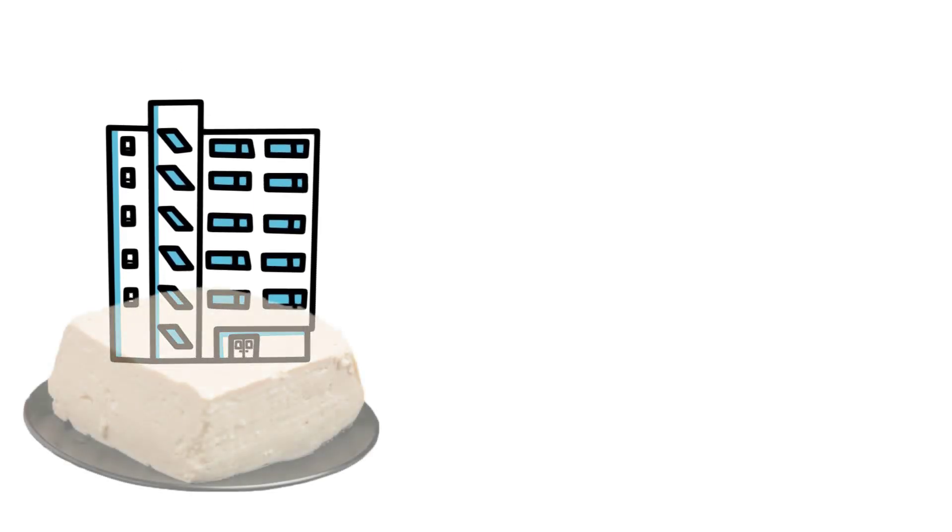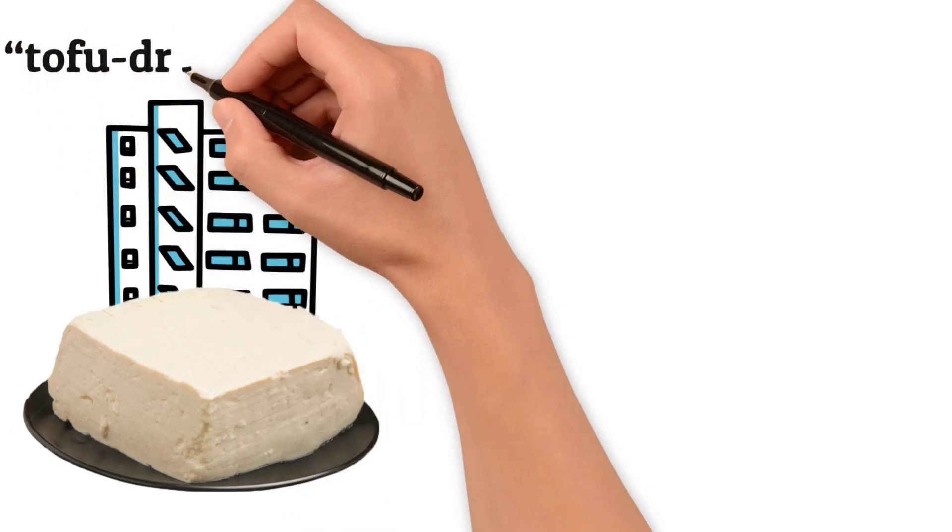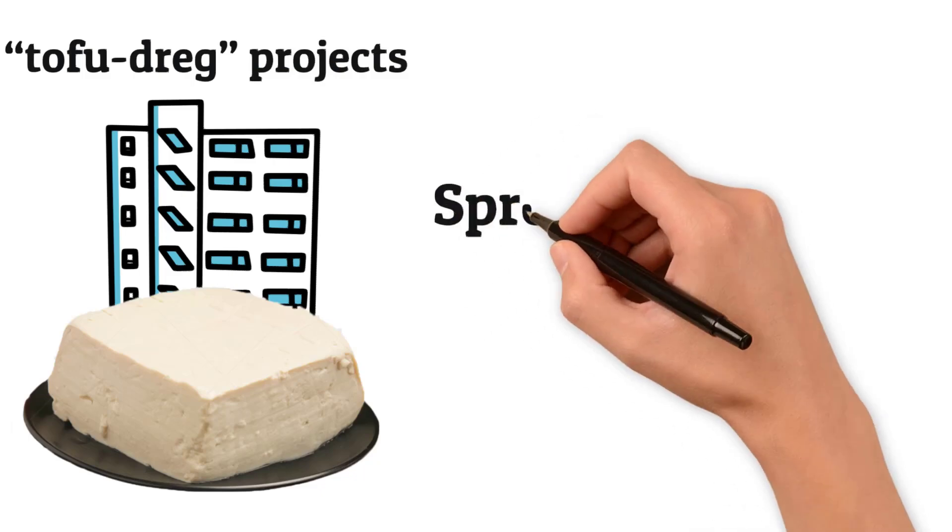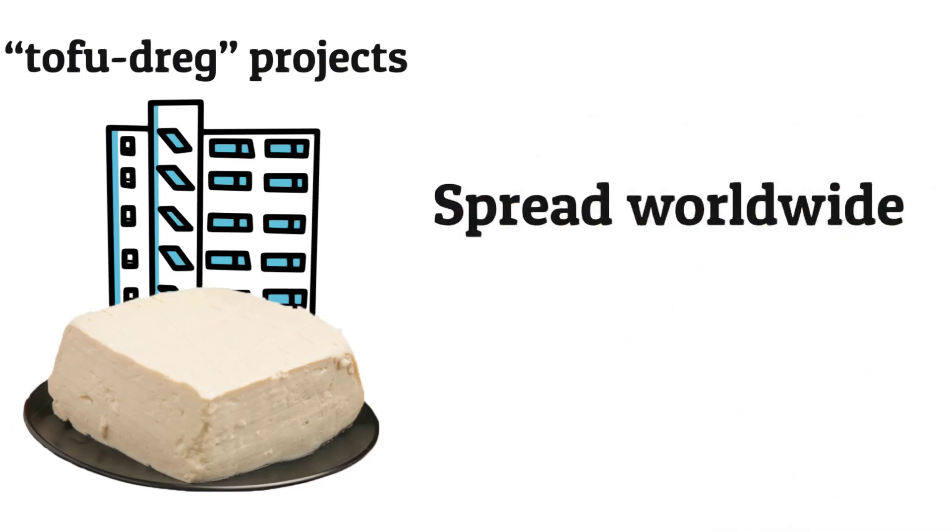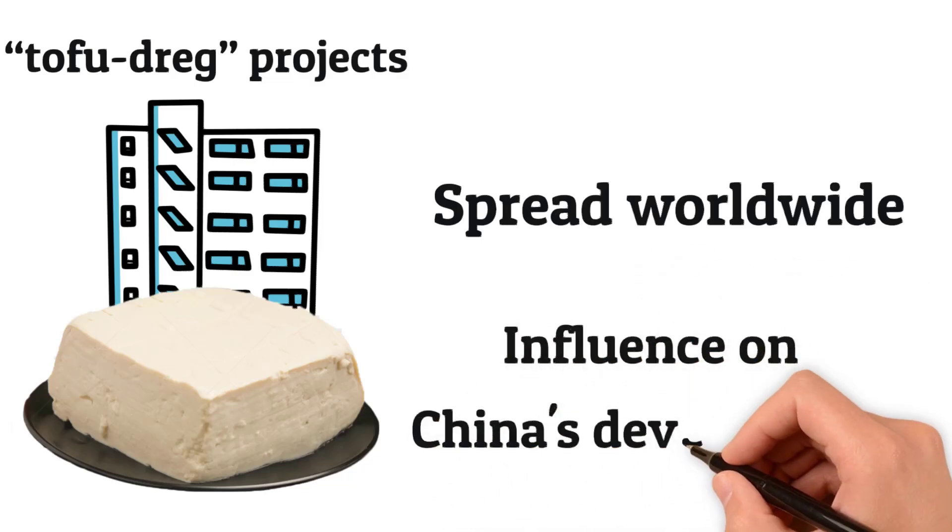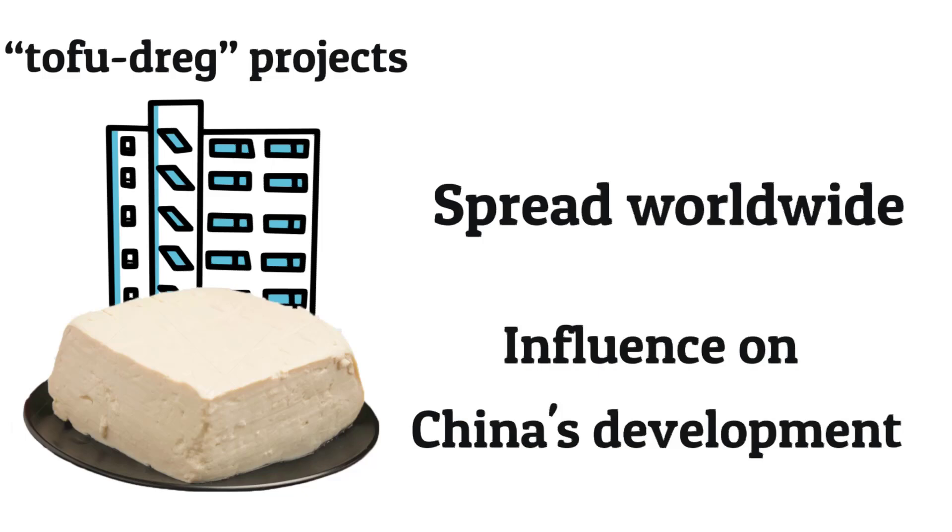In fact, the tofu drag projects are not only popular domestically, but also spread worldwide through the CCP's Belt and Road Initiative. Over the past decade, the CCP government has provided $1 trillion in loans to Belt and Road countries, with the aim of developing economic trade and expanding China's influence in Asia, Africa, and Latin America.